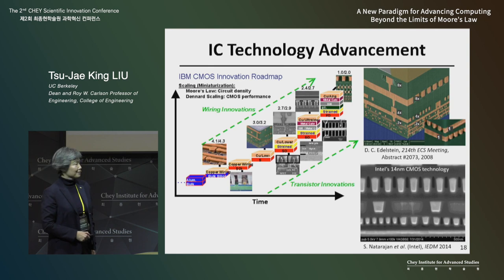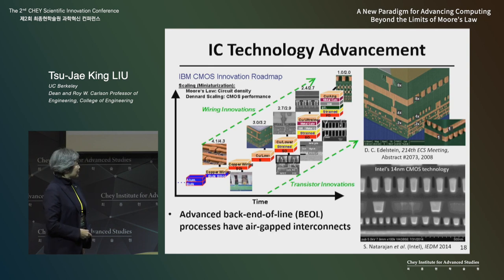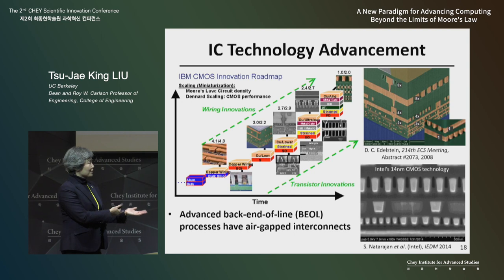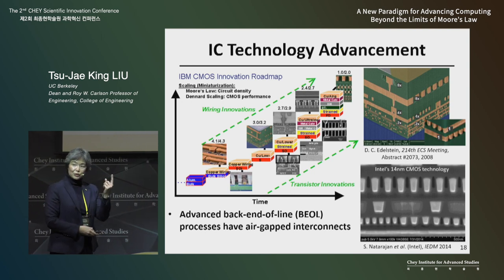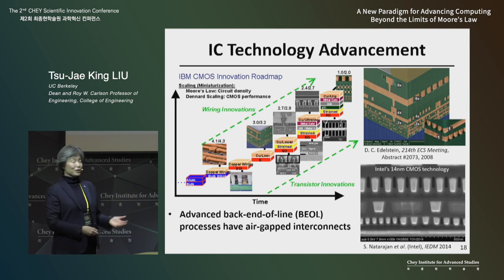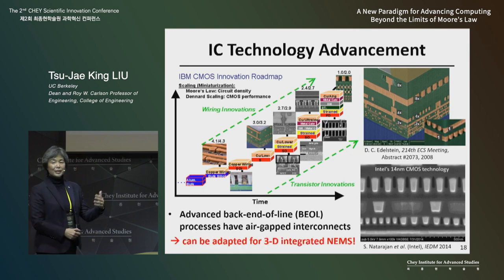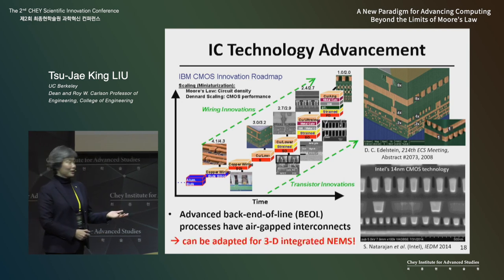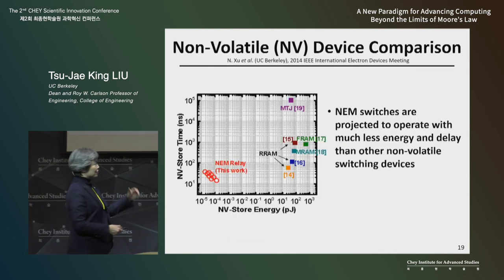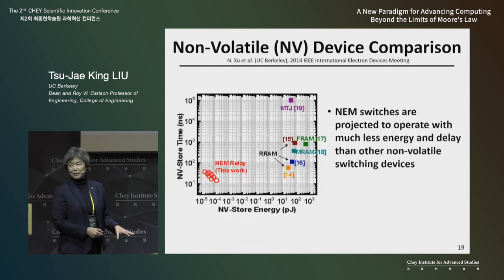We can actually make use of state-of-the-art semiconductor technology and make mechanical switches using these metal layers — the metal wires already present in the manufacturing process to interconnect the transistors. This is what we call reconfigurable interconnect technology, and the switches can be integrated on top of the CMOS.